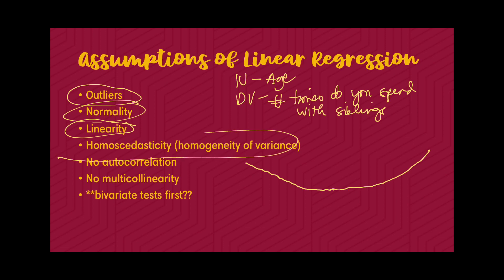The next assumption is homoscedasticity — the assumption of constant variance. In regression analysis, homoscedasticity refers to the condition where the variability of the residuals — the differences between observed and predicted values — is constant across levels of the independent variable. The spread or dispersion of residuals should be the same across the entire range of predictor variables included in the model. This ensures our inferences are valid, our model is reliable, and that there is an assumption of independence among predictor variables.